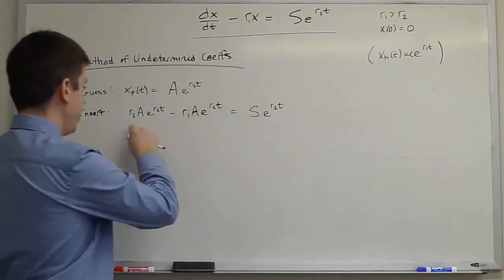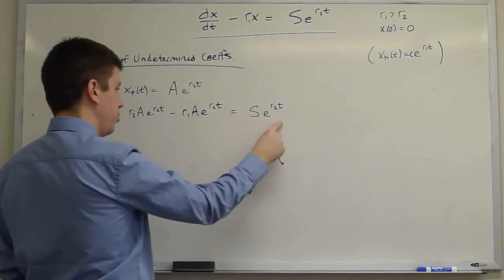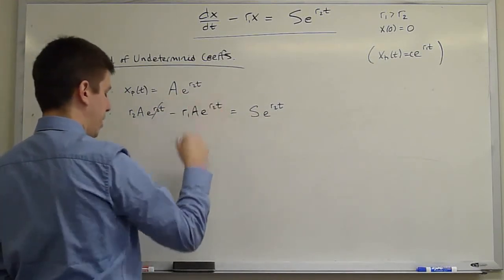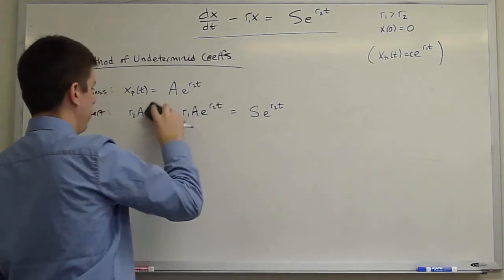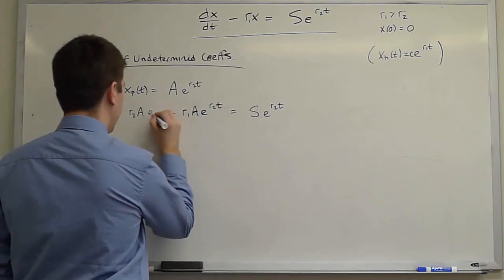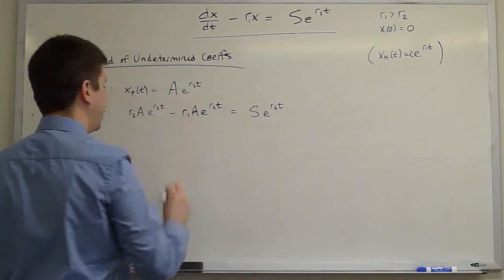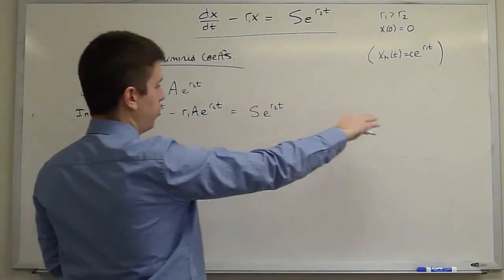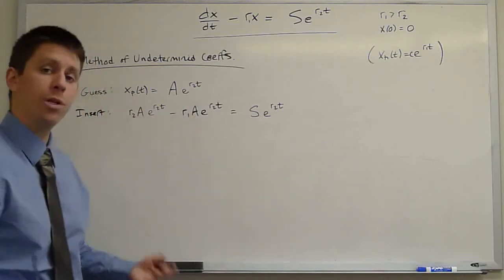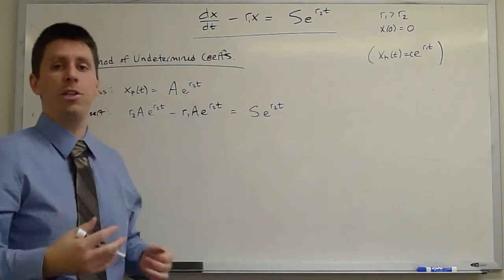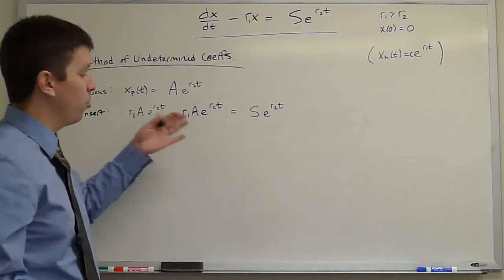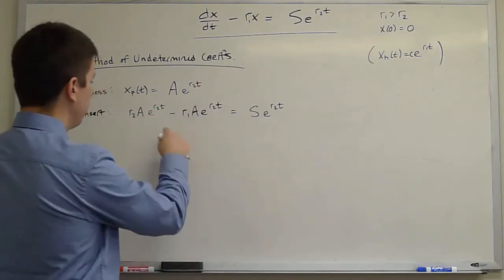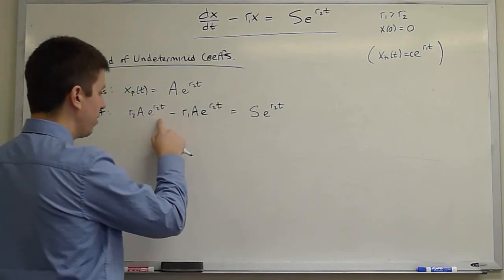I have in each place a common factor of e to the R2t. I won't cancel them. Because in general, if your right hand side is more complicated, you would have different kinds of terms. And what we really want to do is collect all the like terms. In this case, there's only one kind of term. Our job is fairly simple. But we collect all of the like terms. We say, for terms like e to the R2t,